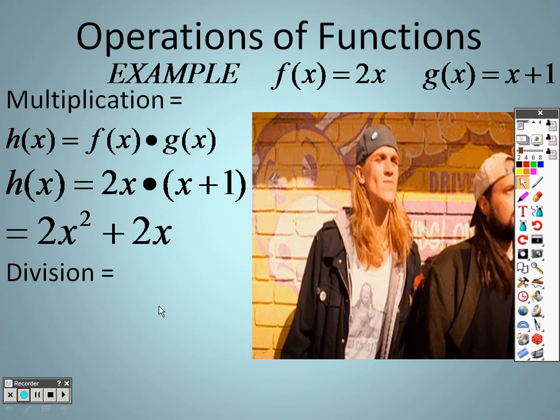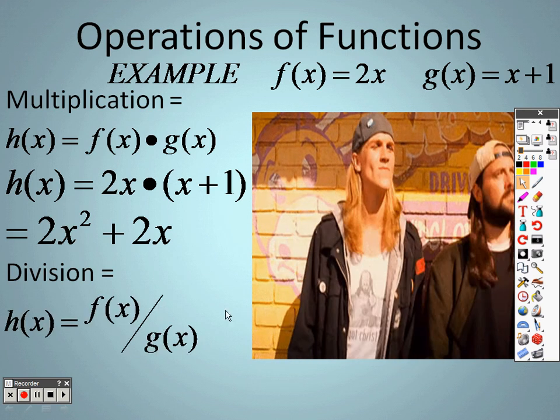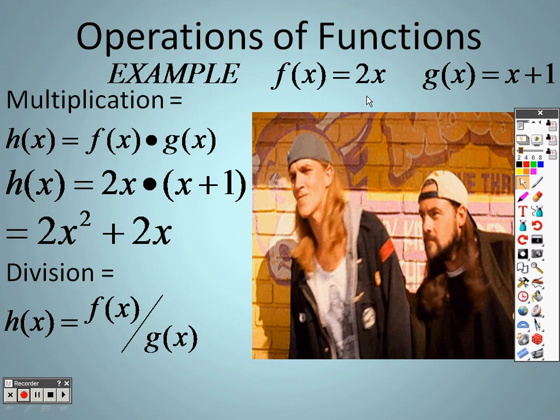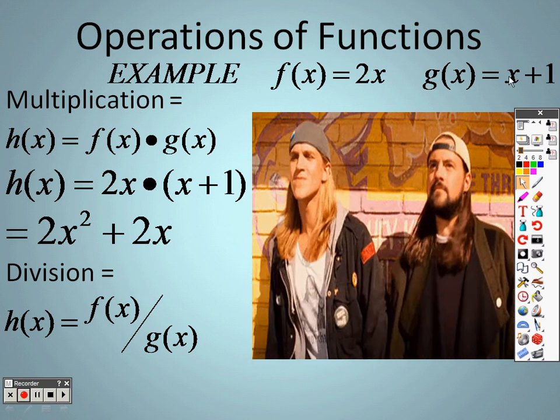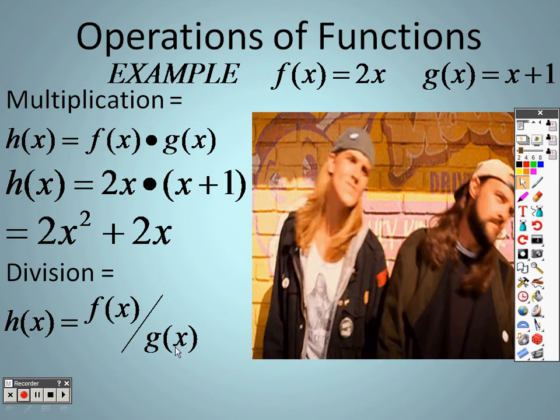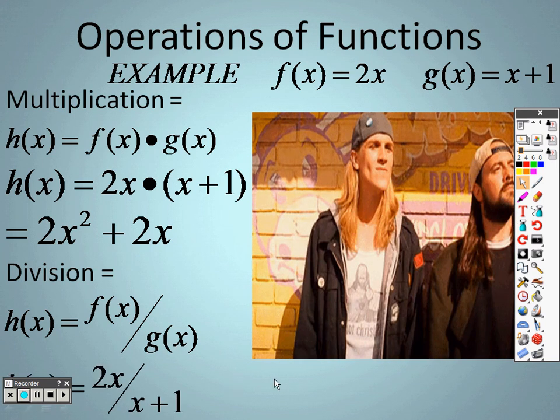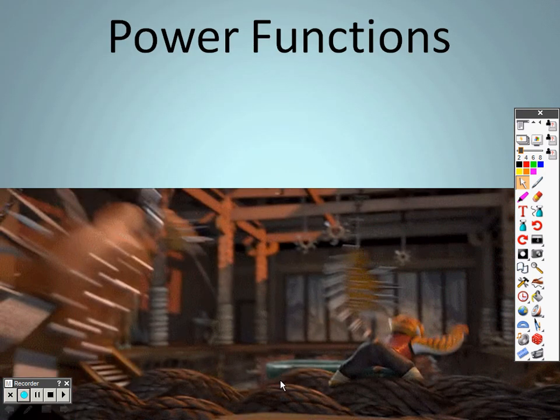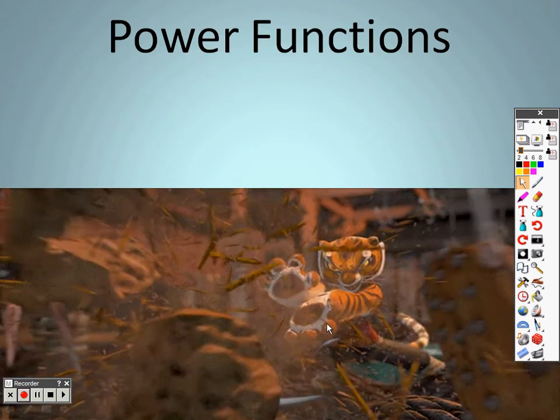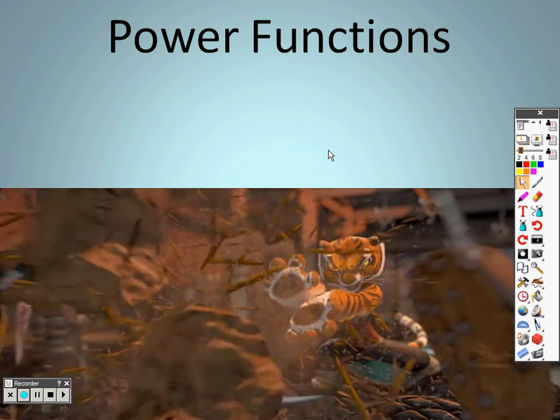And division with operations of exponents is just saying f of x divided by g of x. Since f of x is 2x, I put a 2x in there. Since g of x is x plus 1, I put an x plus 1 in down there. And you end up with 2x over x plus 1. So basically a good way of saying most of this is substitution. That's basically the big way to say all this.